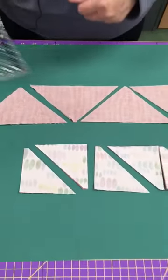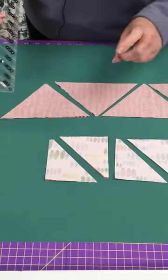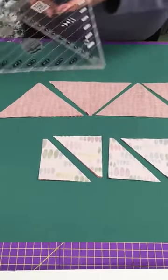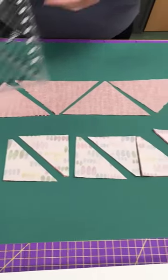And you again are not wasting any fabric. You are keeping straight of grain on the edges of your block, and you can cut a wonderful set of quarter square triangles or half square triangles in a variety of sizes with both of these tools.